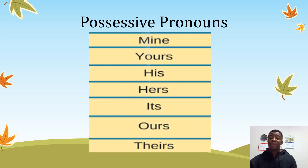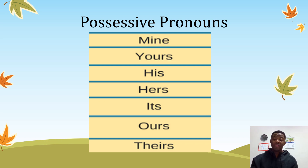In possessive adjectives we have: my, your, his, her, its, our, and their. Now let's go to possessive pronouns. For possessive pronouns we have: mine, yours, his, hers, its, ours, and theirs.